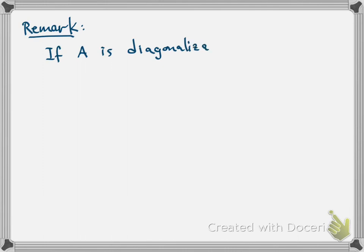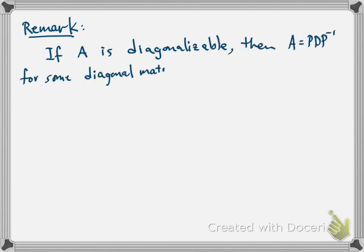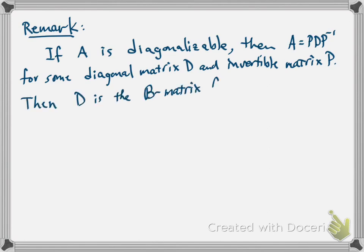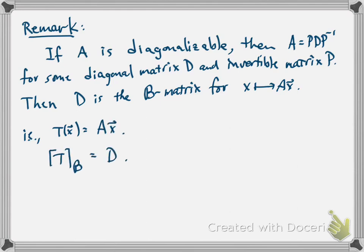As a final remark: if A is diagonalizable, then A can be written as P times D times P inverse for some diagonal matrix D and an invertible matrix P. That tells us that D, the diagonal matrix, is the B matrix for the transformation given by multiplication by A. So if T of X equals A times X, then in B coordinates the B matrix of T is simply the diagonal matrix D.